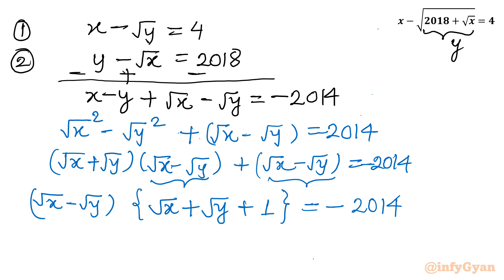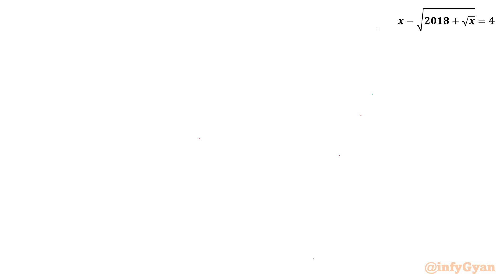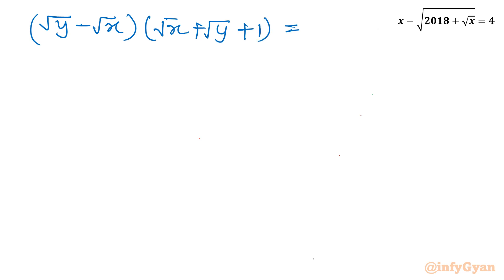Now it is in product form, so it is better to multiply both sides by minus one. I will write: (√y − √x)(√x + √y + 1) = 2014. Now I will apply prime factorization. So: (√y − √x)(√x + √y + 1) = 2014. Now you can find the prime factorization of 2014.